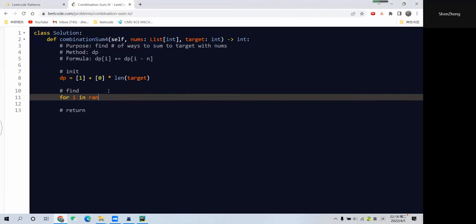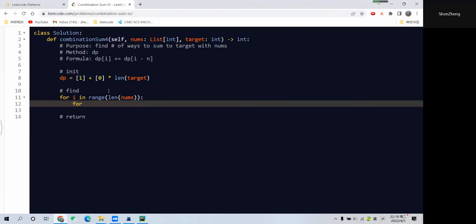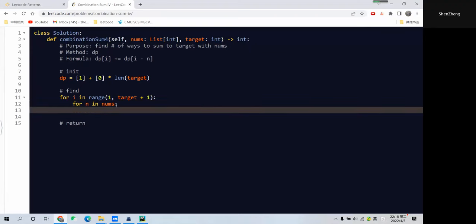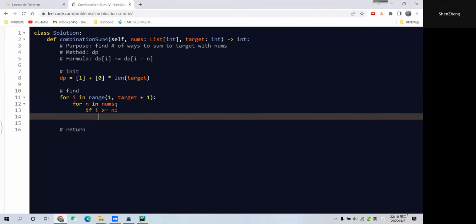Now I want to traverse all elements from 1 to target plus 1, because our Python indexing works that way. And we also want to traverse all nums in the nums array. If i is greater than or equal to n, this means we can continue our search for smaller numbers.